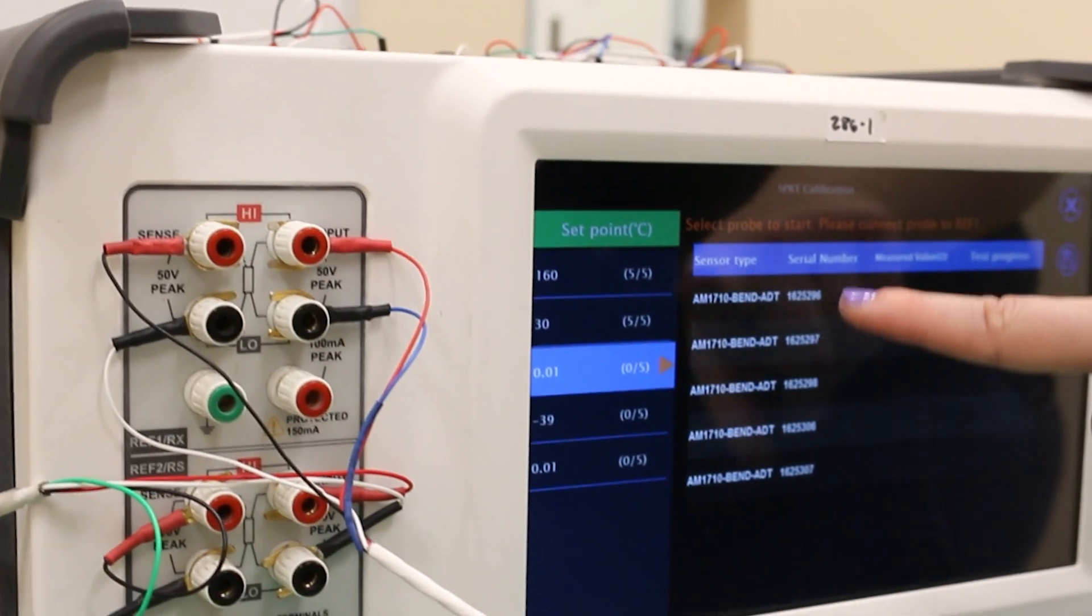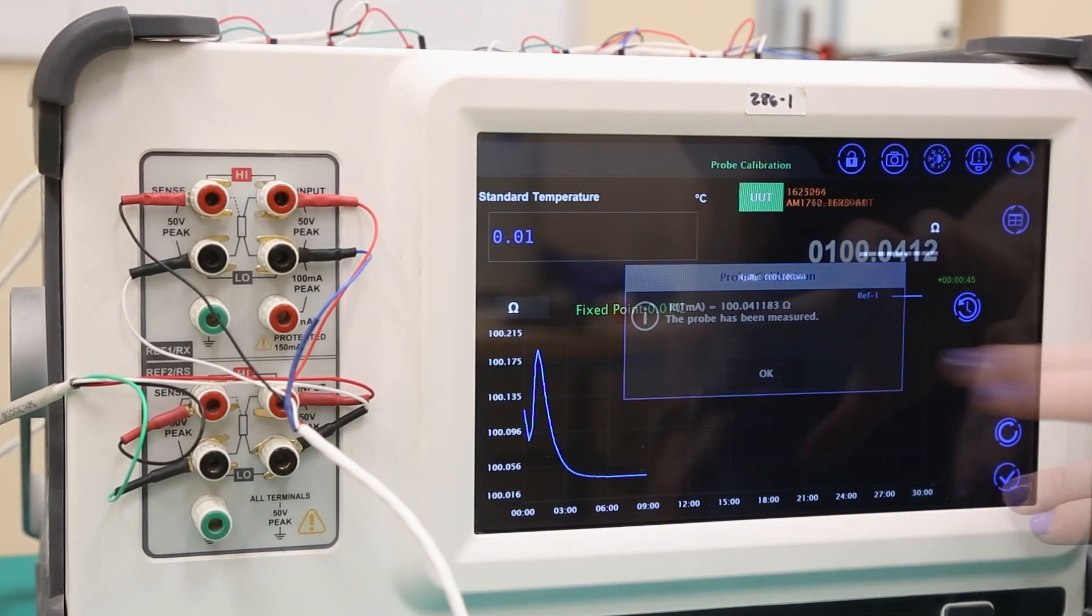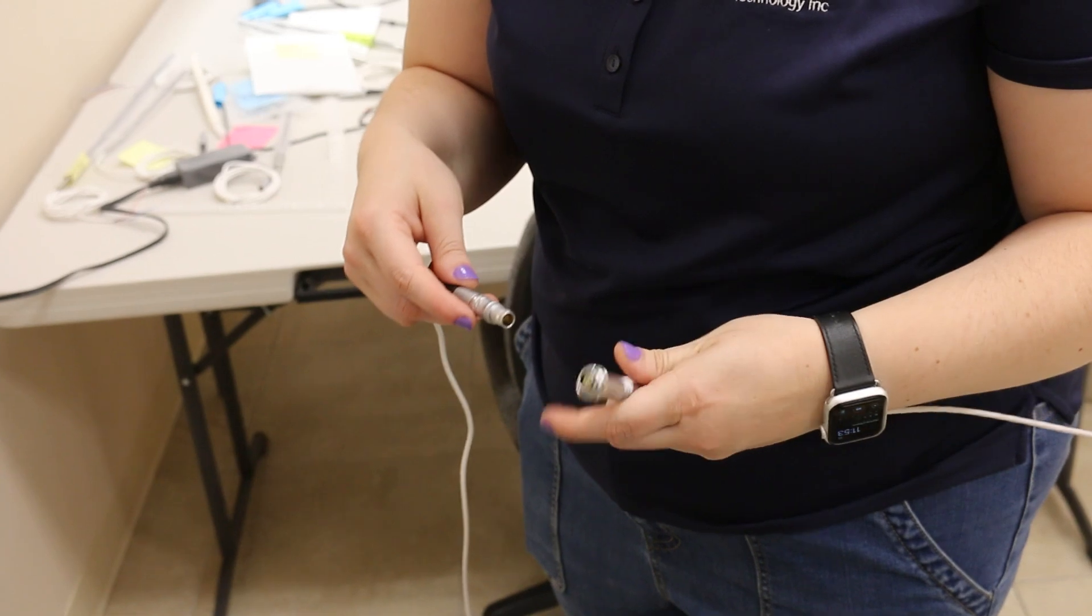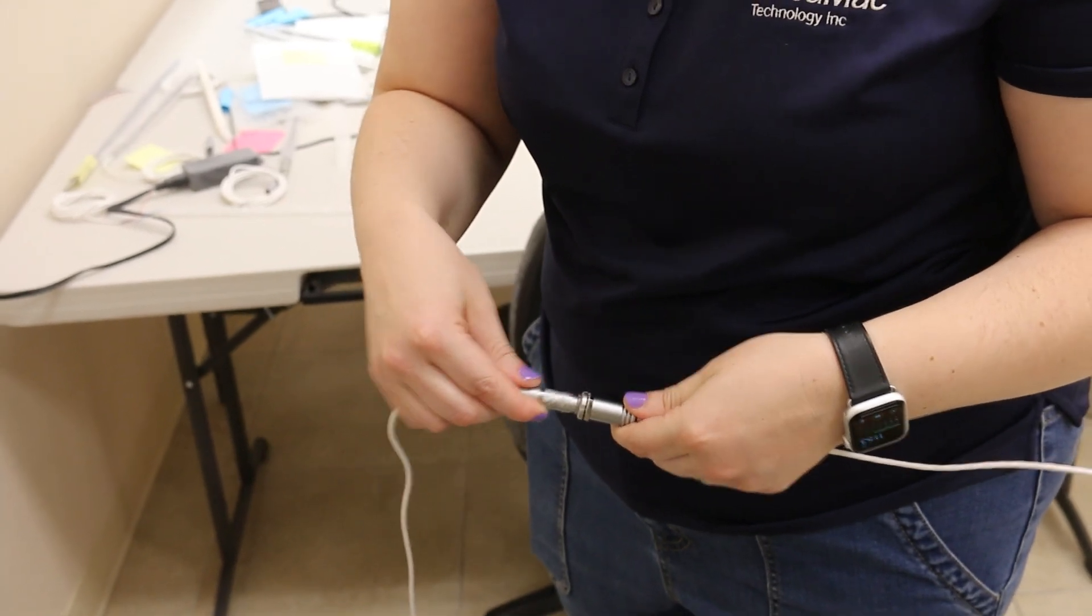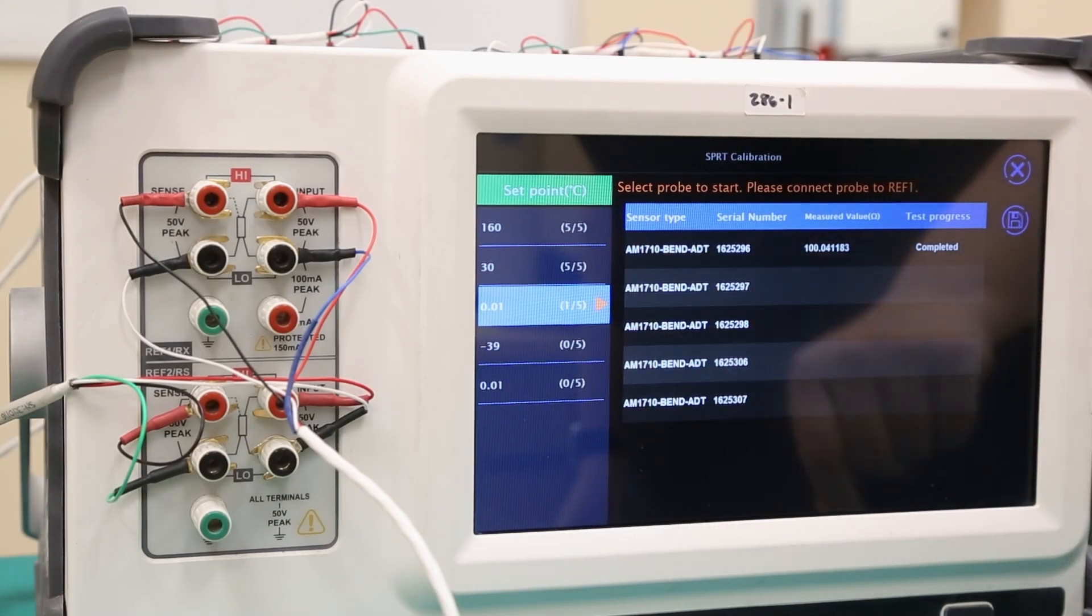On the 286, select this probe from the menu to begin measurement. After the probe has been measured, save the test cache, remove the probe from the cell, and dry it off. Swap the REF1 connection to the next probe to be measured, add it to the triple point cell, and repeat the process to complete the measurement.